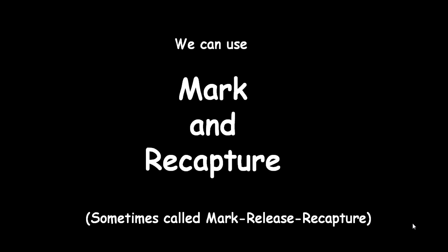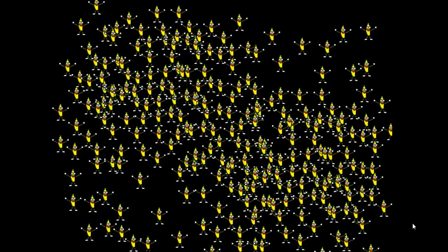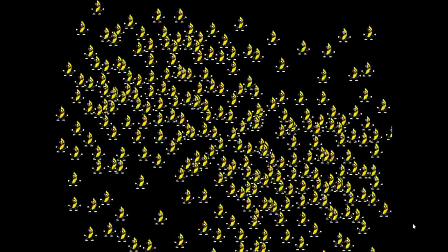Well, what you do is you revert to mark and recapture. And this is how it works. Here's a population that we can't count directly. There's too many of them and they're too lively. And they're dancing.